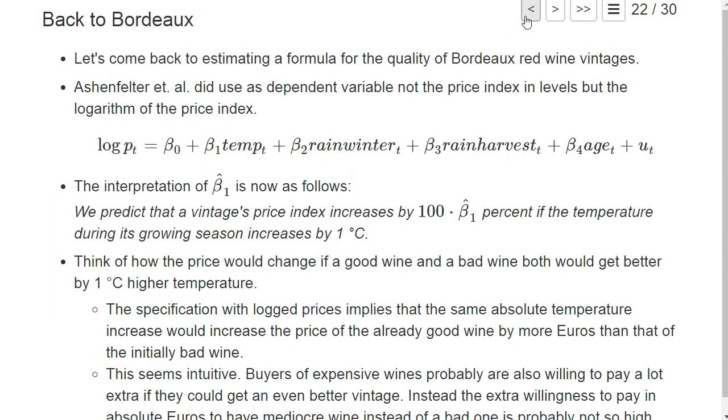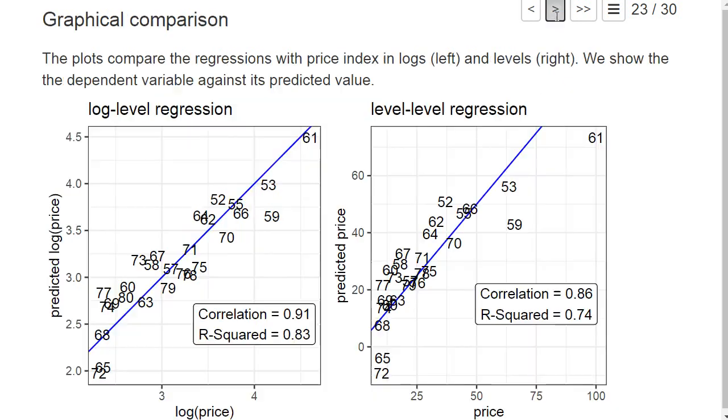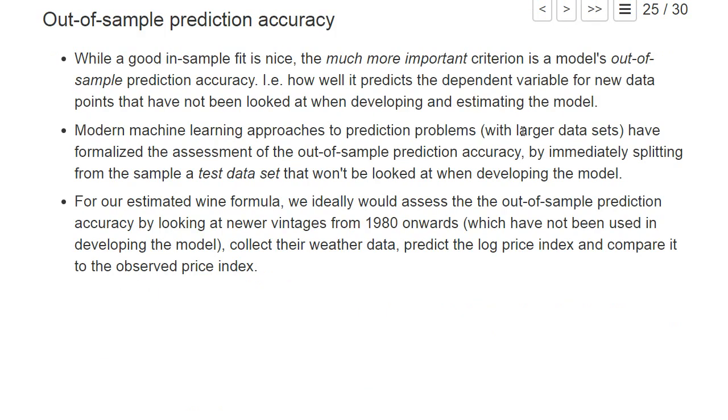Also, probably Ashenfelter, when they thought which variables they wanted to include in their regression, they looked at which gave a very nice fit. So basically we cannot now just split the data set into a smaller training data set for estimation and a test data set to get out-of-sample prediction as we will later do in the machine learning approach.